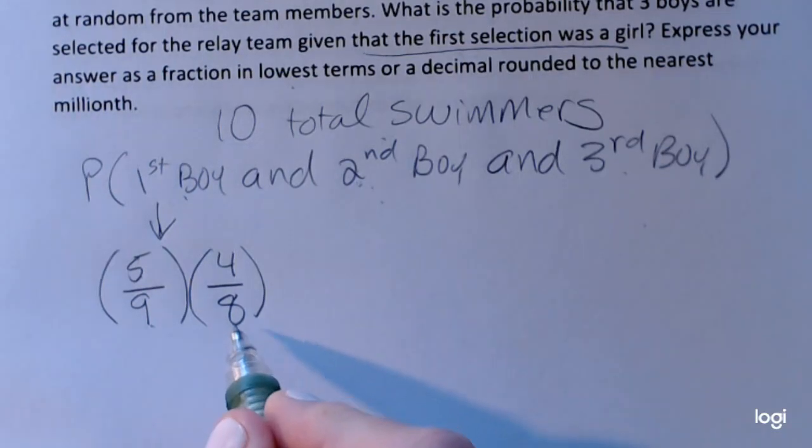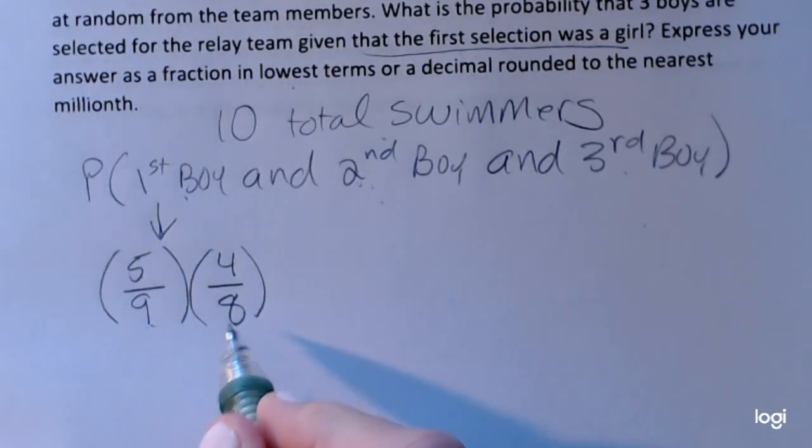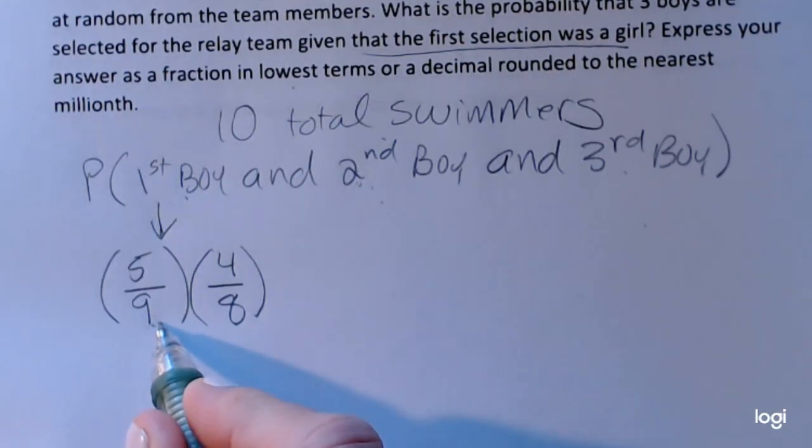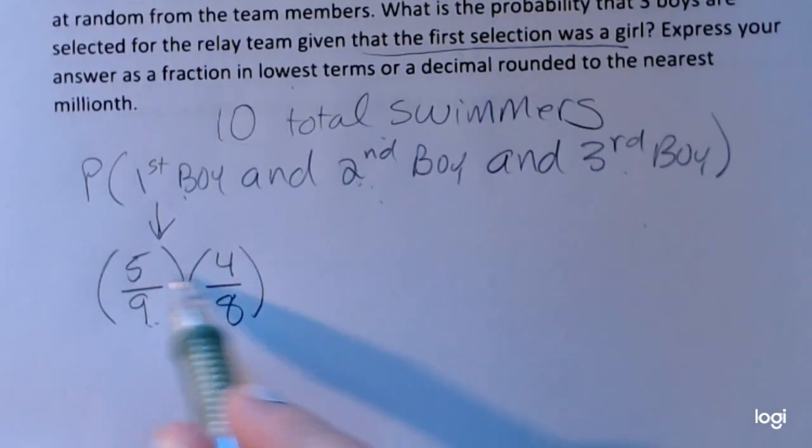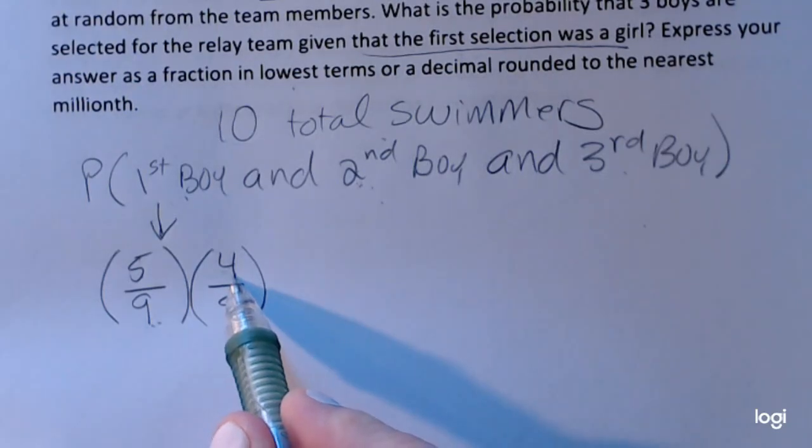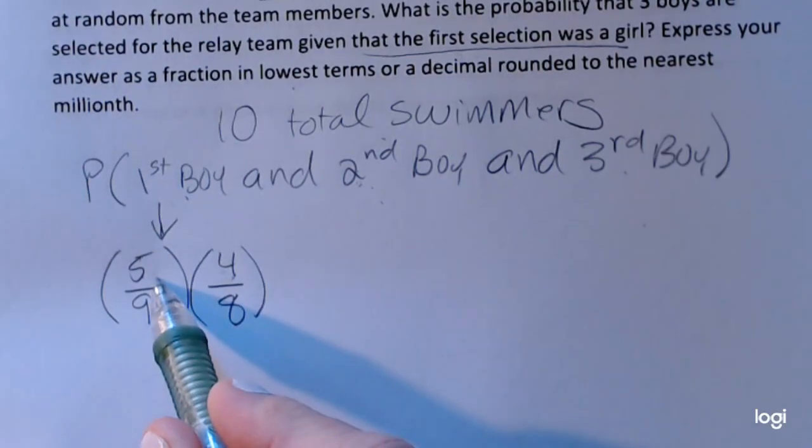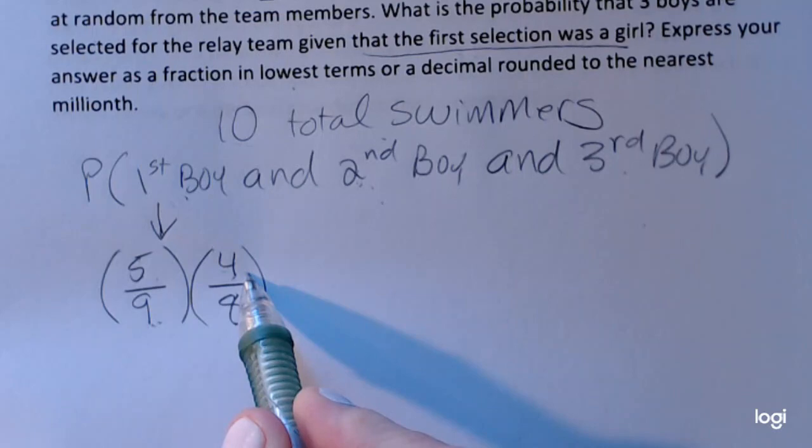Again, I have to reduce the sample size because a boy has already been selected and then previously a girl has been selected. I want to reduce the numerator here because the first selection is a boy and then the second selection is a boy.